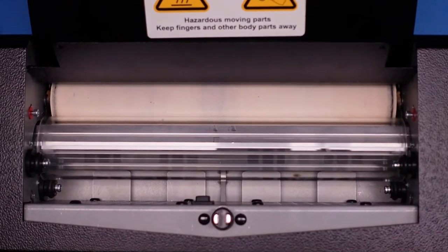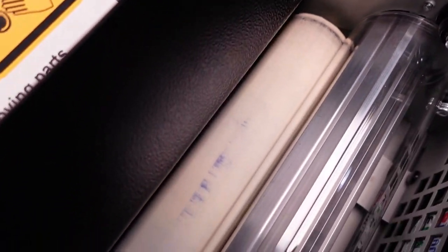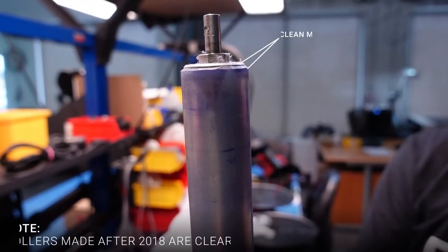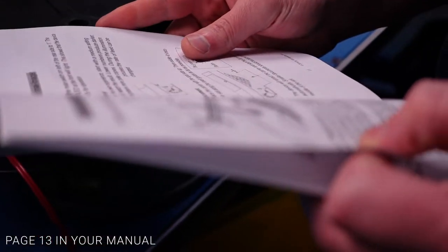Over time, your copier's roller will pick up dirt, debris, and of course dyes from everyday use in your shop. This can impact your copier's performance and damage the carrier sheet, which will in turn affect your stencils. Be sure to check the rollers on a regular basis or when your carrier sheet begins to show signs of wear.